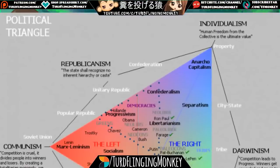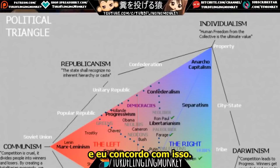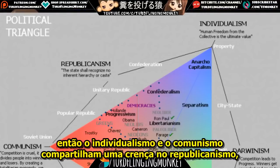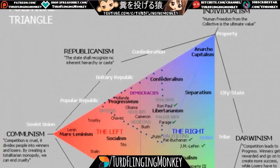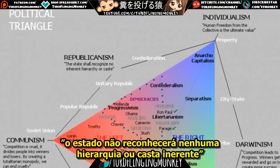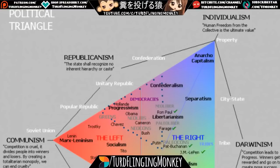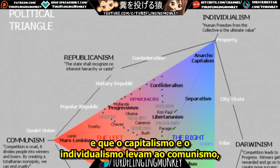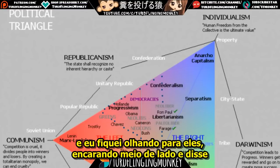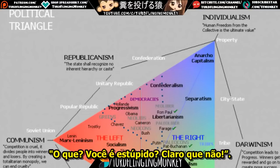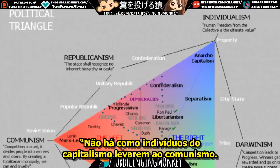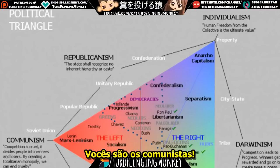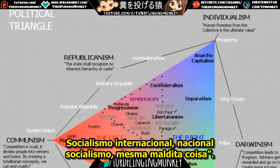Let's start with individualism — I consider myself an individualist capitalist. I believe in small government. The quote at the top under individualism reads: 'Human freedom from the collective is the ultimate value.' Individualism and communism share a belief in republicanism, defined as 'the state shall recognize no inherent hierarchy or caste.' When I've talked to people on the alt-right, they told me capitalism was a Jewish conspiracy and that individualism leads to communism. To that I say: you fascists are the communists — international socialism and national socialism are the same thing.